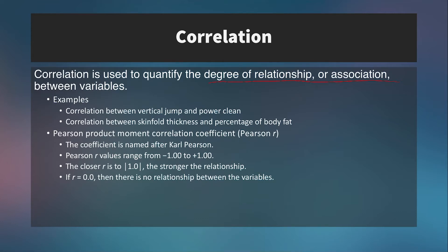One of the most commonly used measurements of correlation is the Pearson product-moment correlation coefficient, abbreviated as Pearson r, named after statistician Carl Pearson. The r value will always range from negative one to positive one. The closer r is to an absolute value of one — either negative one or positive one — the stronger the relationship. Conversely, if r is close to zero, there is no relationship between the variables in the sample you're measuring from.